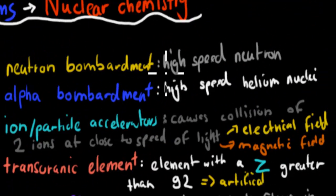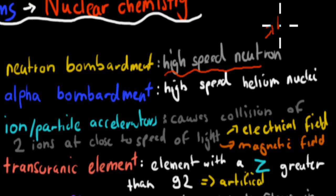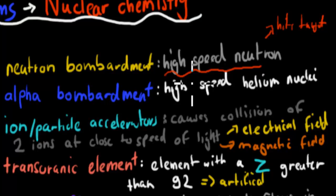We had neutron bombardment, which was a high-speed neutron, which usually hits a target. And that target becomes something else. It changes its actual elemental number or atomic mass number. It becomes a new or different type of isotope.